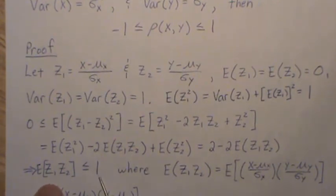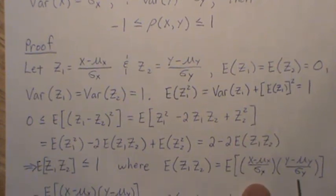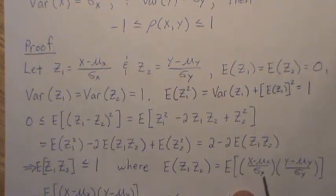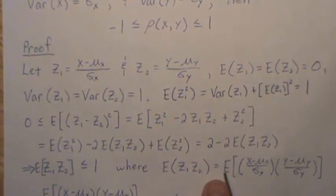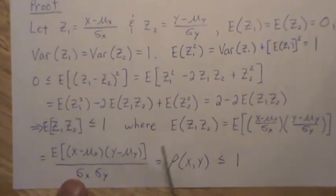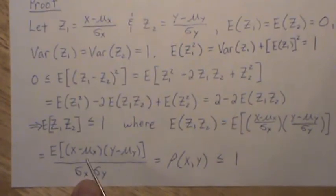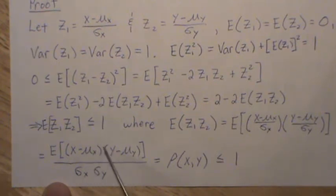Now, the expected value of z1 times z2 — filling in what z1 and z2 are by definition — gives us this expression. The standard deviations of x and y are constant so we can bring those out, which gives us this piece here. This is exactly the covariance divided by the standard deviations, which is correlation. Therefore the correlation is less than or equal to 1.